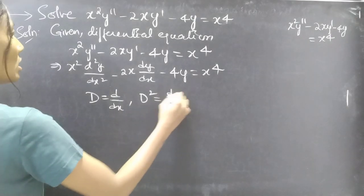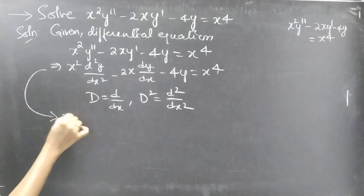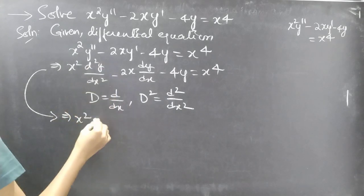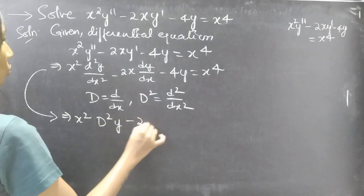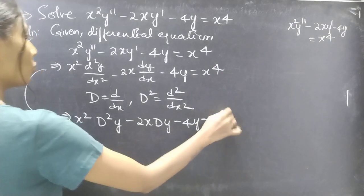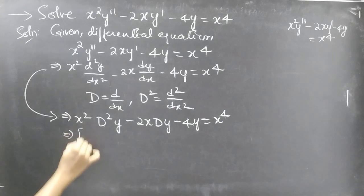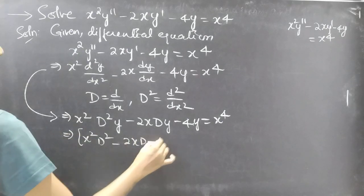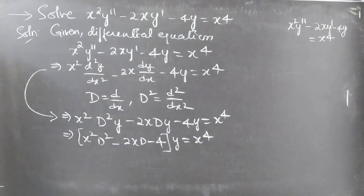Then D² will be d²/dx². This becomes x²D²y minus 2xDy minus 4y equals x⁴. Now taking y common from all three terms on the left-hand side, we get (x²D² minus 2xD minus 4) y equals x⁴.